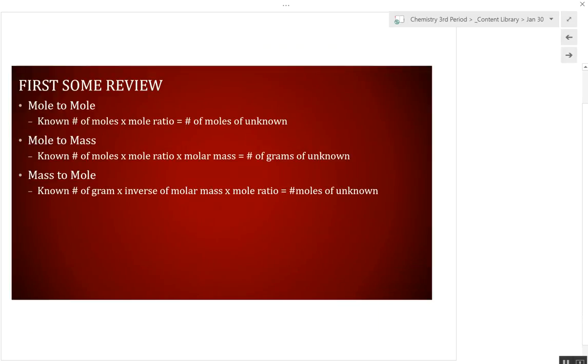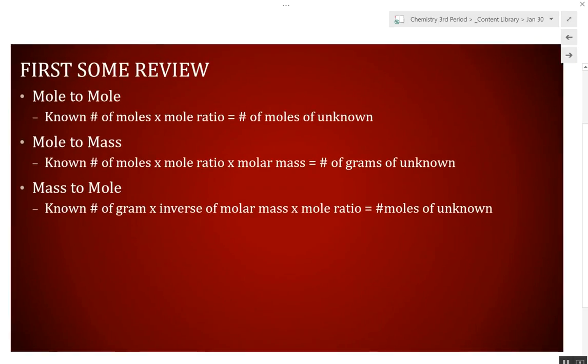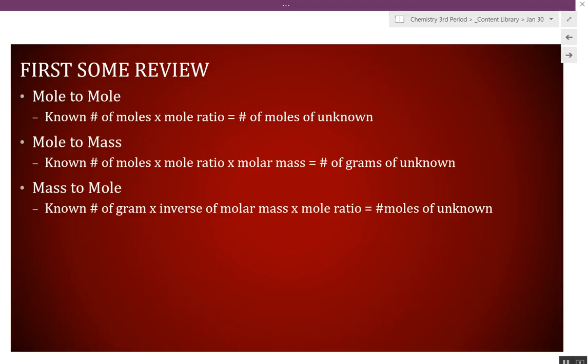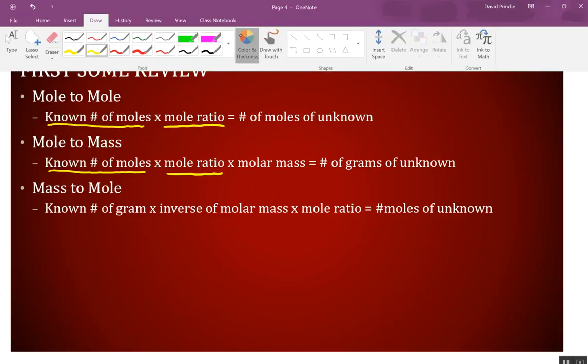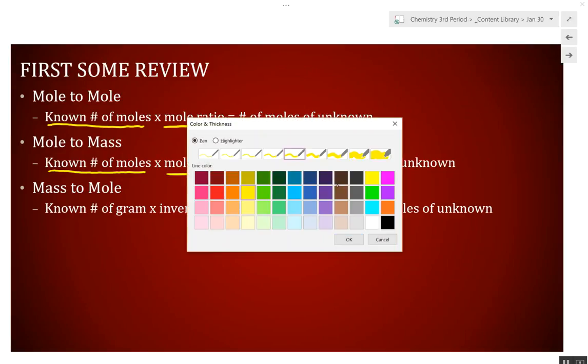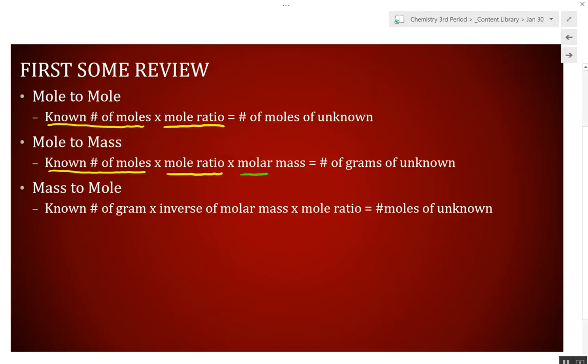Mass-to-mass stoichiometry calculations. What I want to first do is some review. Mole-to-mole is the simplest one. You start with the number of moles of what you know, times a mole ratio, will give you the number of moles of unknown. This is stuff we've gone over already. Mole-to-mass: you start out as a mole-to-mole problem, where it changes to get mass, you're going to multiply by the molar mass.